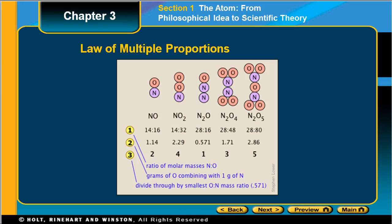Or you can have NO2, which is 14 to 32, or N2O, which is 28 to 16, or N2O4, which is 28 to 48, or N2O5, which is 28 to 80. That's multiple proportions.